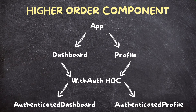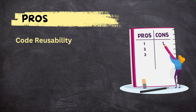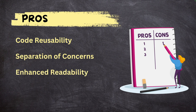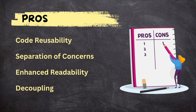Now let's look at the pros of using the HOC design pattern. First is code reusability — HOC allows you to reuse logic across multiple components, keeping your code DRY (do not repeat yourself). Next is separation of concern — by encapsulating common behavior in HOCs, you separate concerns and keep components focused on their primary responsibilities. HOC also provides enhanced readability; for example, a component wrapped with withAuth HOC makes it clear that it requires authentication. Finally, decoupling — HOC decouples behavior from components, making components easier to test.